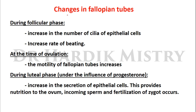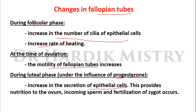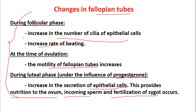Changes in the fallopian tubes during the menstrual cycle: during the follicular phase, there is an increase in the number of cilia of the epithelial cells and an increase in the rate of their beating. At the time of ovulation, motility of the fallopian tubes increases. During the luteal phase, under the influence of progesterone, there is increased secretion from epithelial cells, providing nutrition to the ovum, incoming sperm, and the developing zygote.